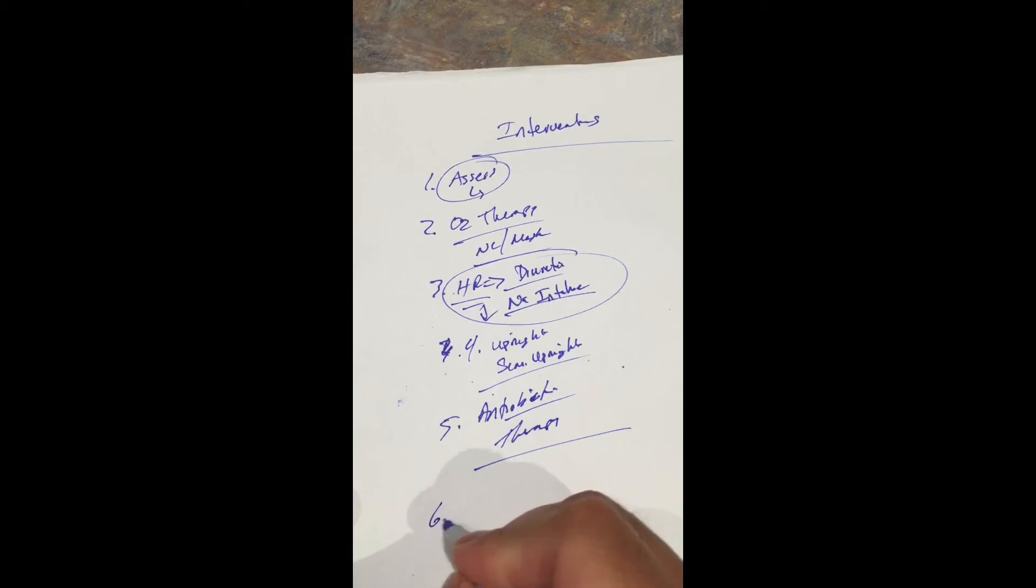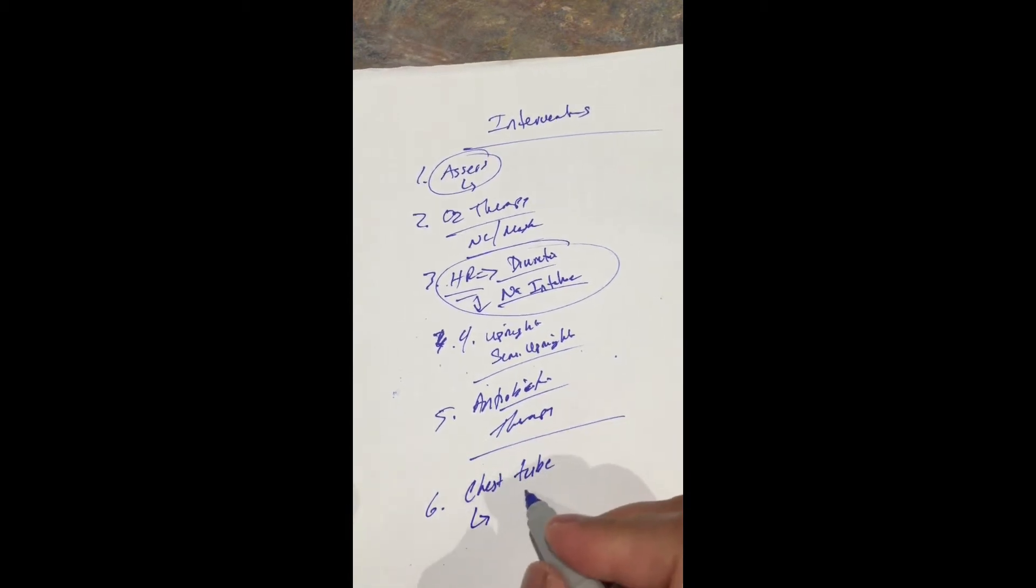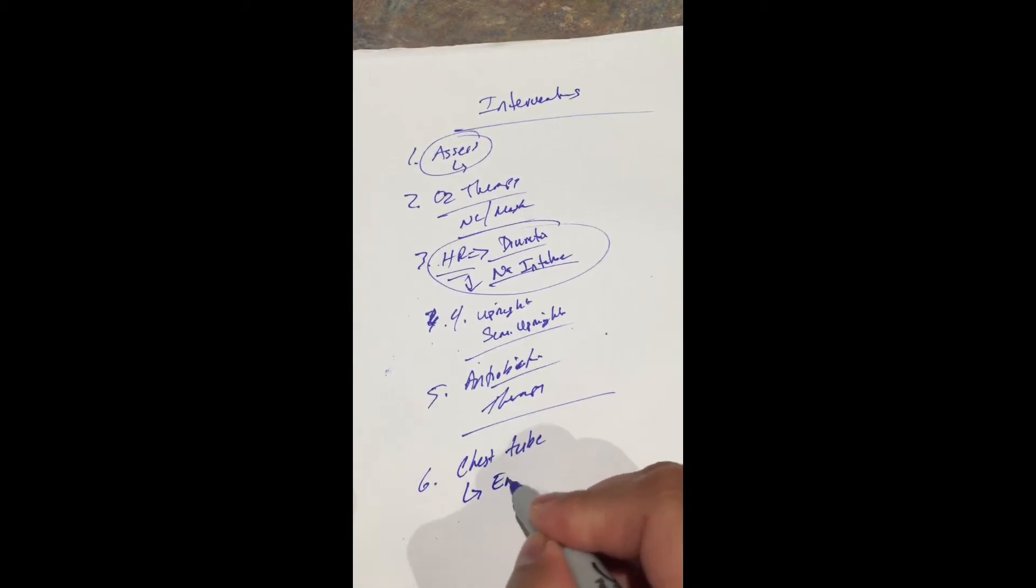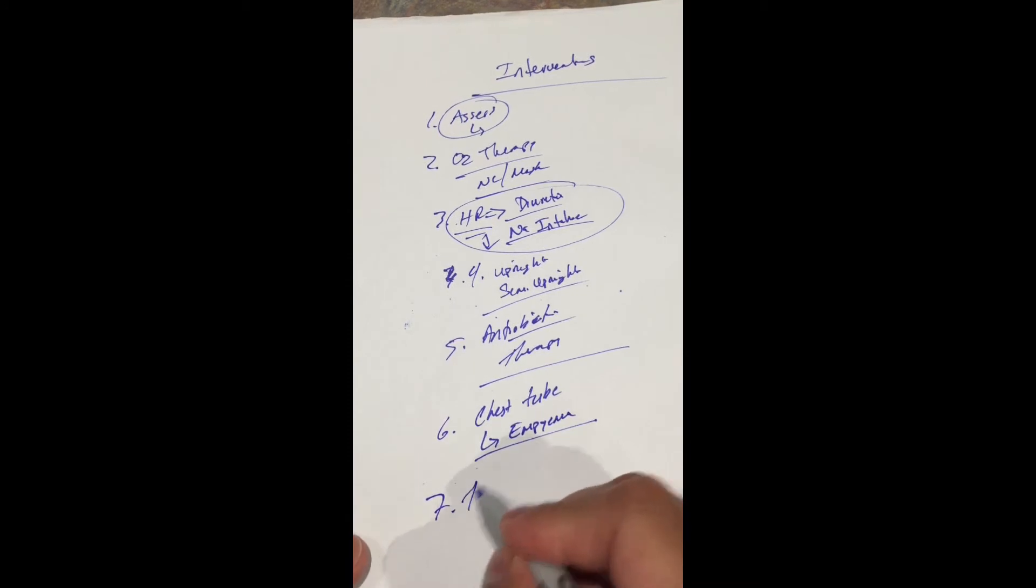If it is severe enough, the effusion is severe enough, something like a chest tube insertion may be performed. This will be very very likely if there is an empyema present. Or for example, something like a thoracentesis may be performed.